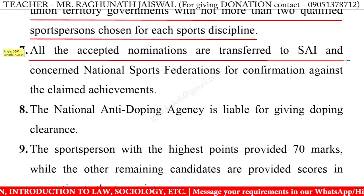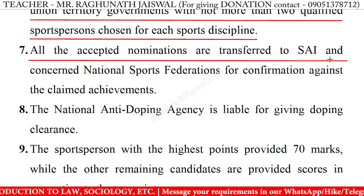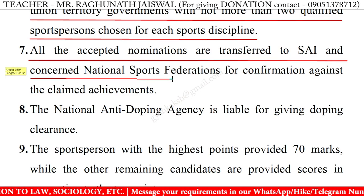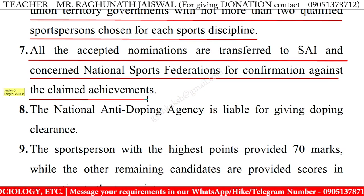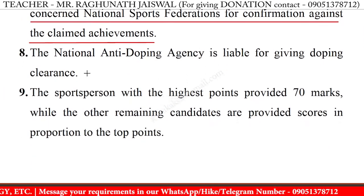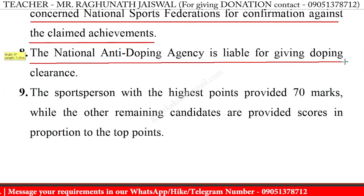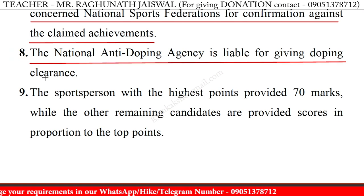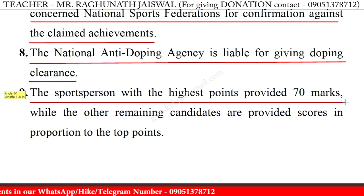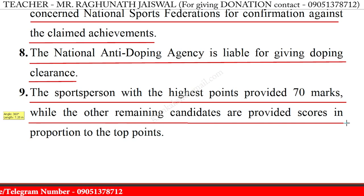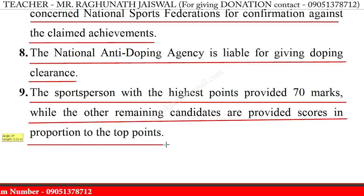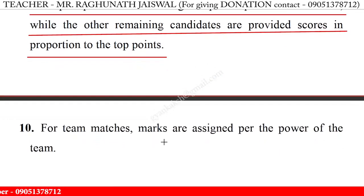All accepted nominations are transferred to SAI and concerned National Sports Federations for confirmation against the claimed achievements. The national anti-doping agency is liable for giving doping clearance. The sportsperson with the highest points is provided 70 marks, while the remaining candidates are provided scores in proportion to the top points.